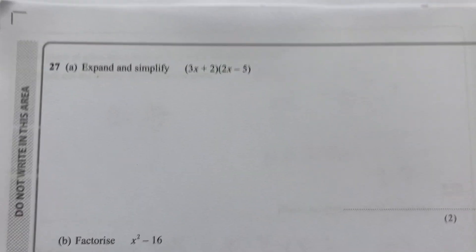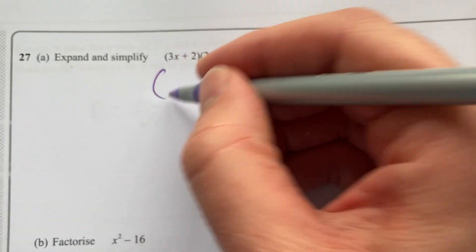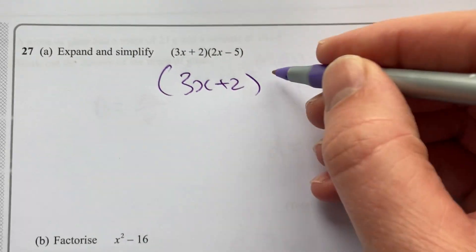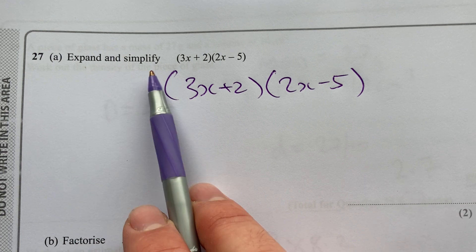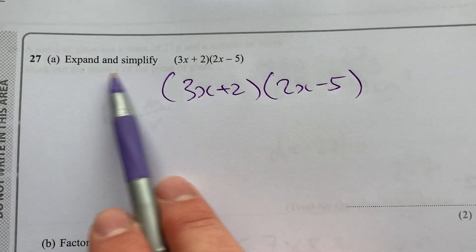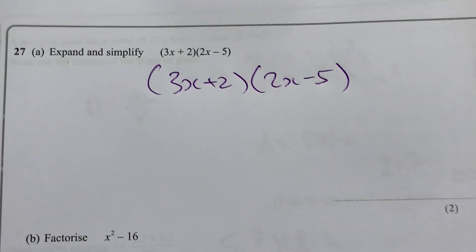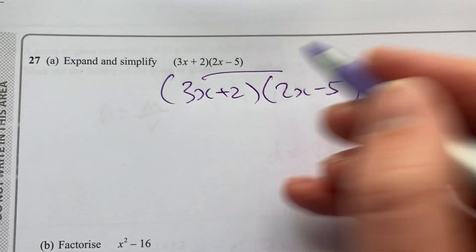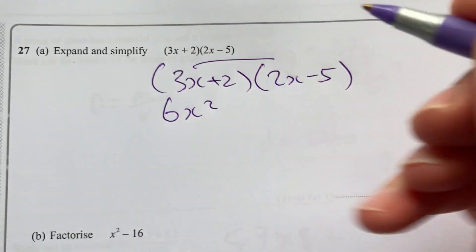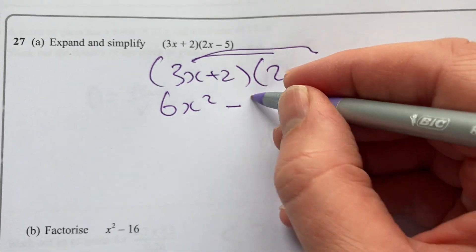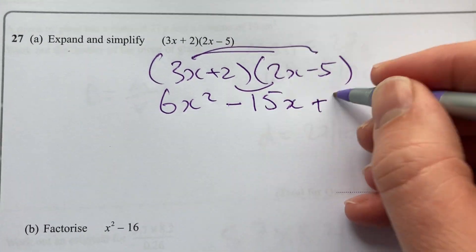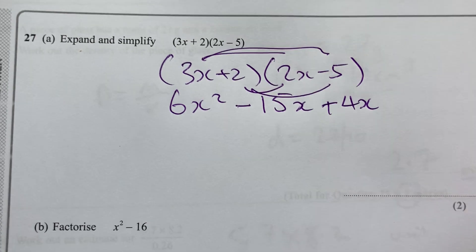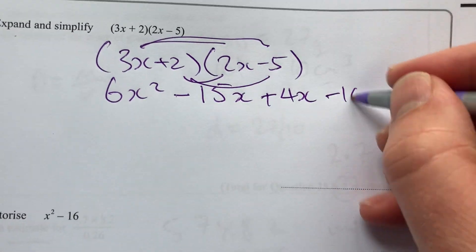Right, last question for this foundation paper 1. Expand and simplify. 3x plus 2, 2x minus 5. I like the algebra questions because they don't say a lot and a lot to read. And if you know the technique, it can be straightforward. 3x times 2x is 6x squared. 3x times minus 5 is minus 15x. 2 times 2x is plus 4x. 2 times minus 5 is minus 10. That's expanding.